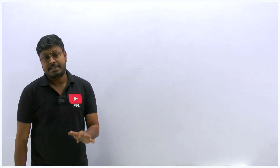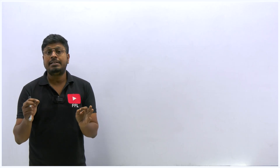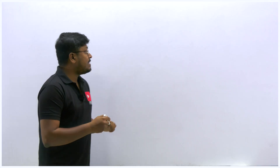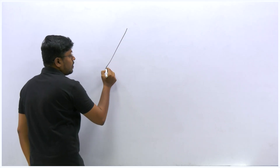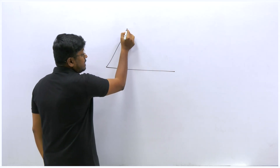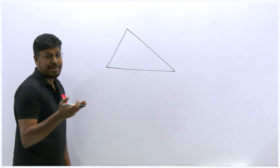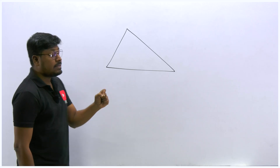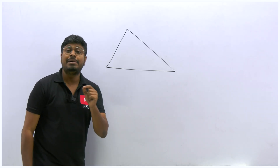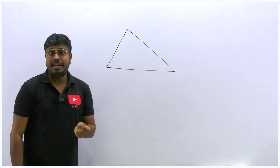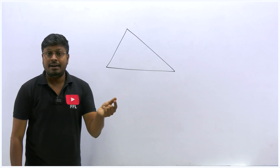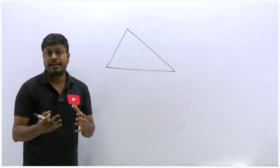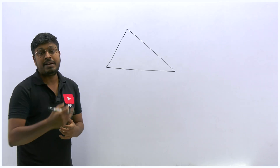Getting into the circumcenter: the first thing that comes to mind is a perpendicular bisector. Let's recall this important concept because incenter and circumcenter questions appear frequently in competitive exams. We'll draw the circumcenter, understand what it is, and also understand what is called the circumradius. After drawing a circumcenter we get an isosceles triangle—let's understand why before solving any questions.